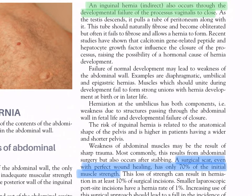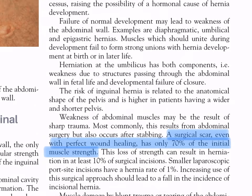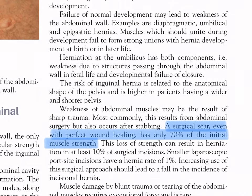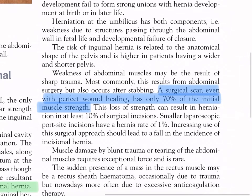Failure of normal development may lead to weakness of the abdominal wall — examples include diaphragmatic, umbilical, and epigastric hernias. Herniation at the umbilicus has both components: weakness due to structures passing through the abdominal wall in fetal life and developmental failure of closure. The risk of inguinal hernia is related to the anatomical shape of the pelvis and is higher in patients with a wider and shorter pelvis. Weakness of abdominal muscles may result from sharp trauma, most commonly abdominal surgery. A surgical scar, even with perfect wound healing, has only 70% of the initial muscle strength, resulting in herniation in at least 10% of surgical incisions.